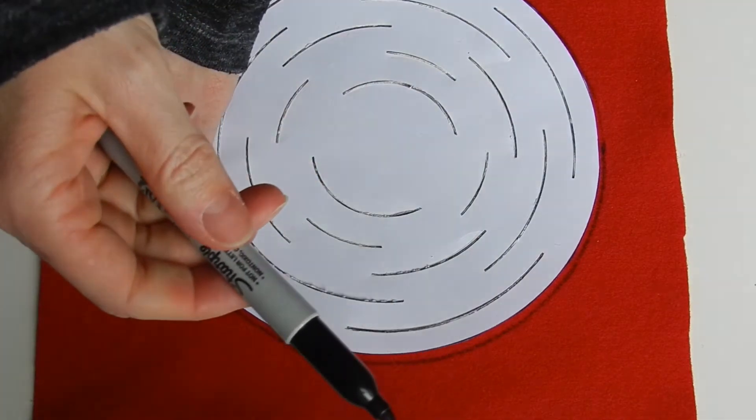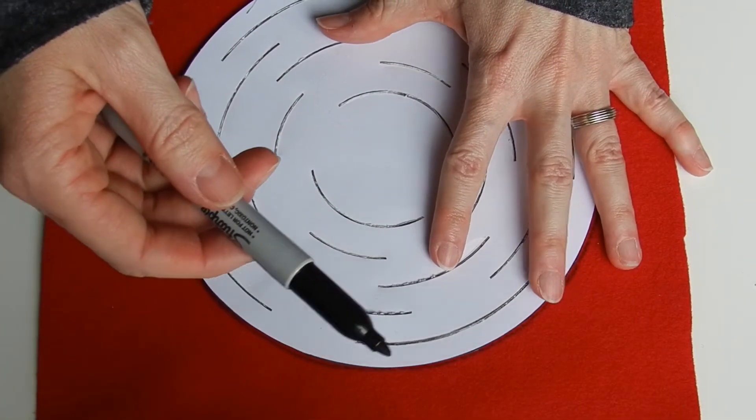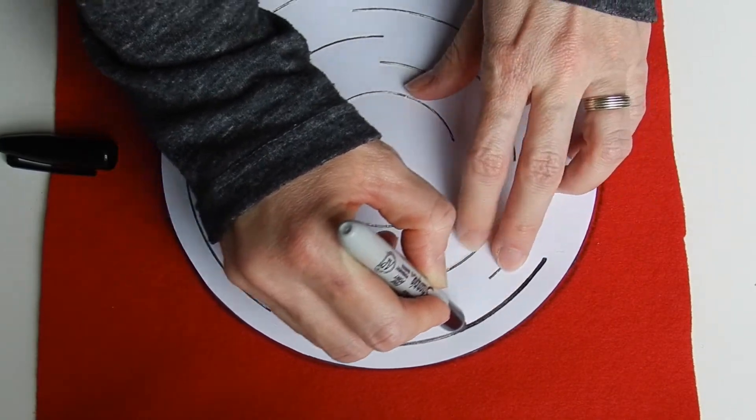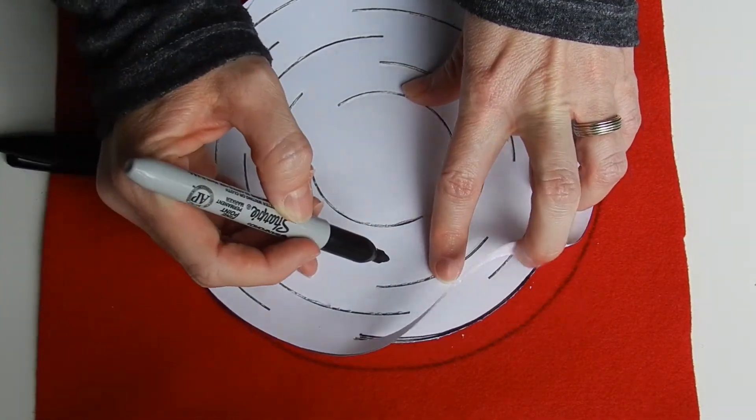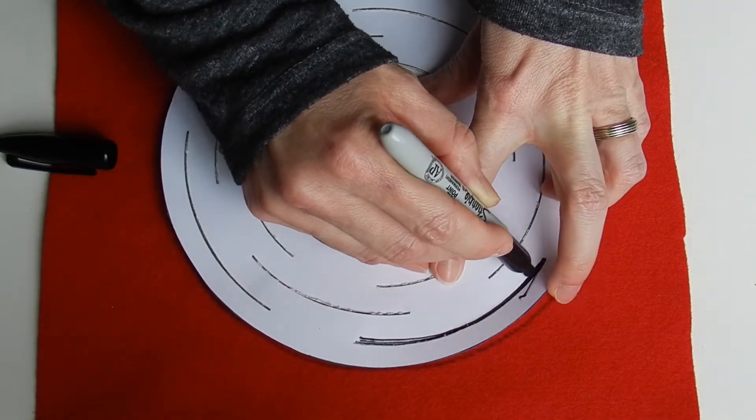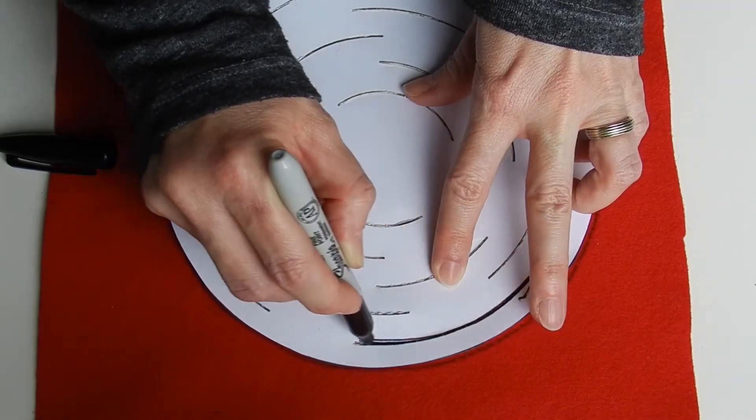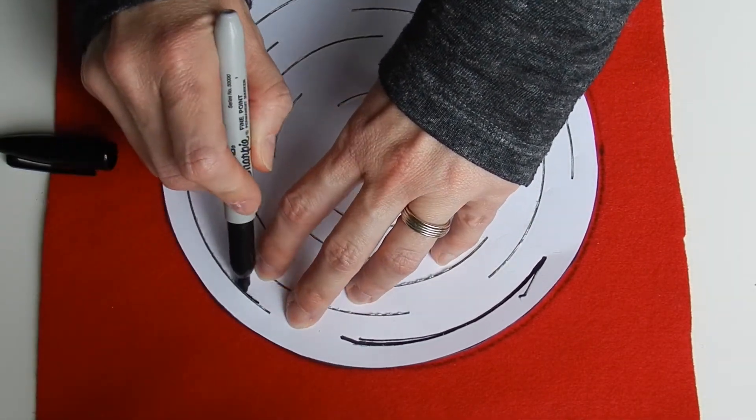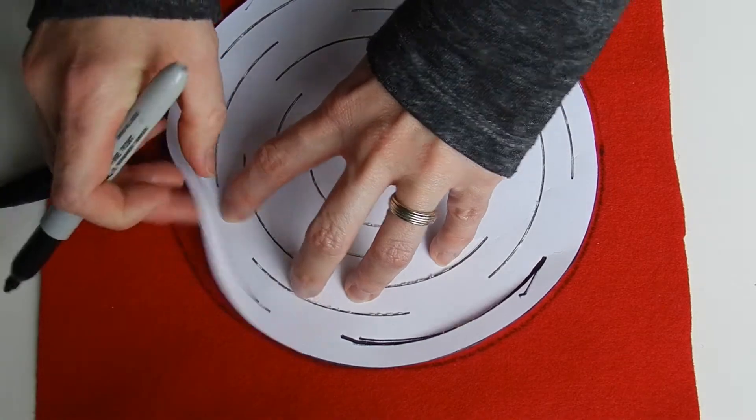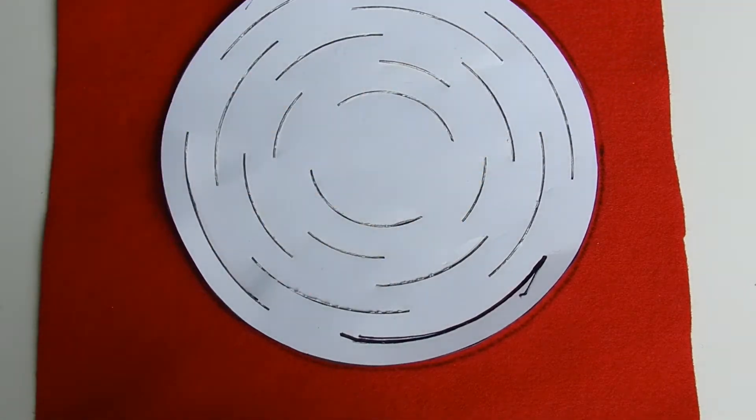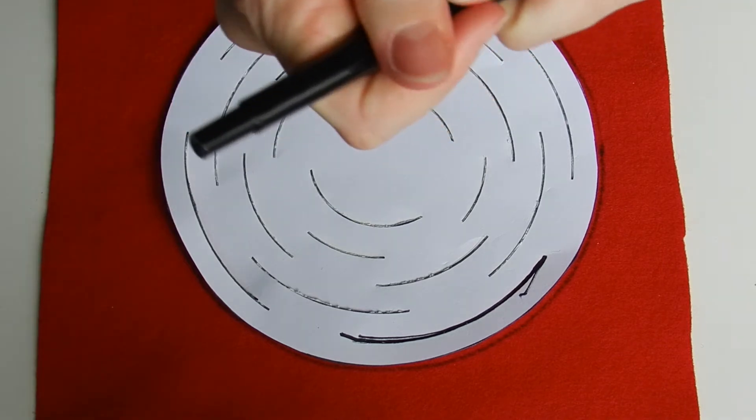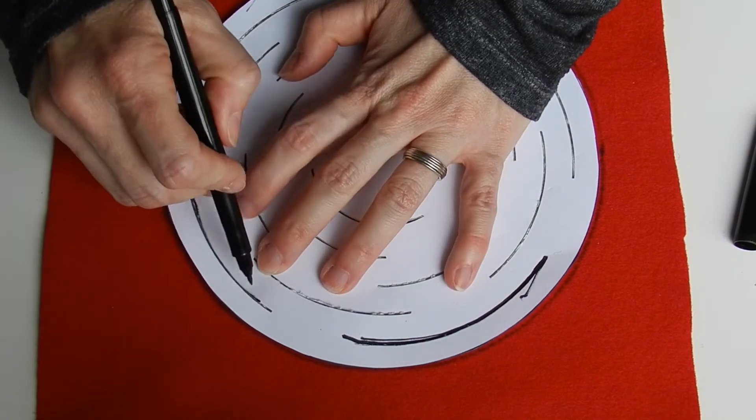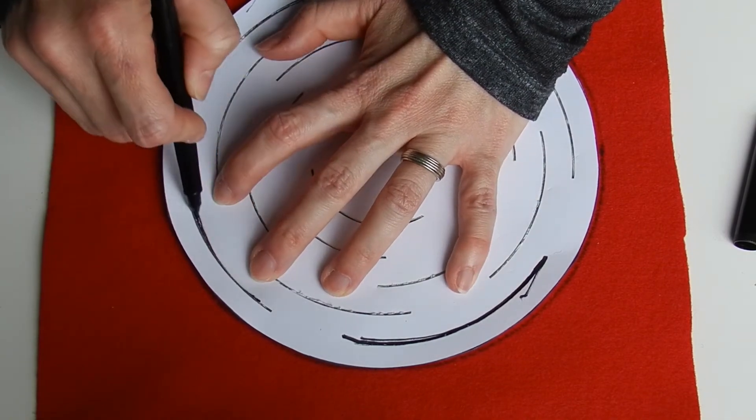When you are done you can brush it off. I'm then going to take my sharpie and I'm going to run my sharpie point through the line. Now you're going to have to lift up the edge a little bit of your pattern in order to be able to draw onto the felt.